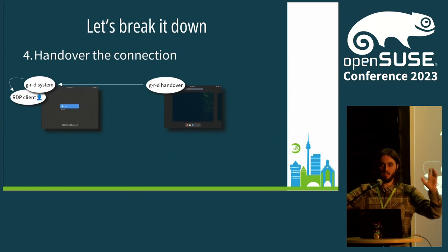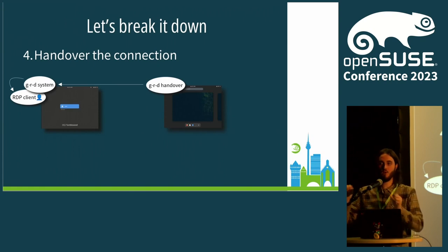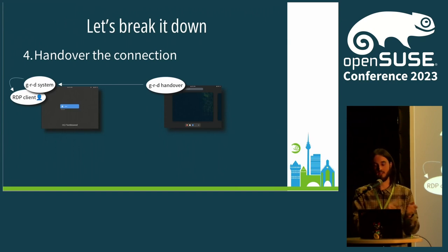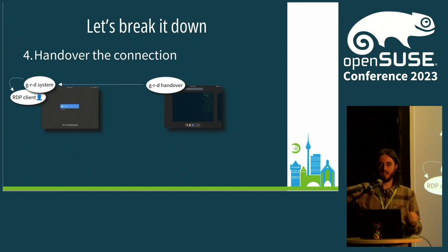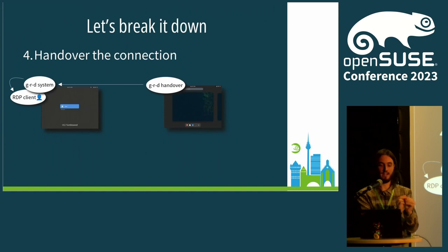The handover daemon has been started. It can communicate with PipeWire, can communicate with Mutter, and then will tell the system daemon: I'm ready, you can start the handover. Along with this, it will send some information — one-time credentials and other stuff that will be needed by the RDP client when it reconnects to the handover daemon. At the same time, the system daemon is going to create a routing token. The routing token is a unique identifier that relates the RDP client with this handover daemon.